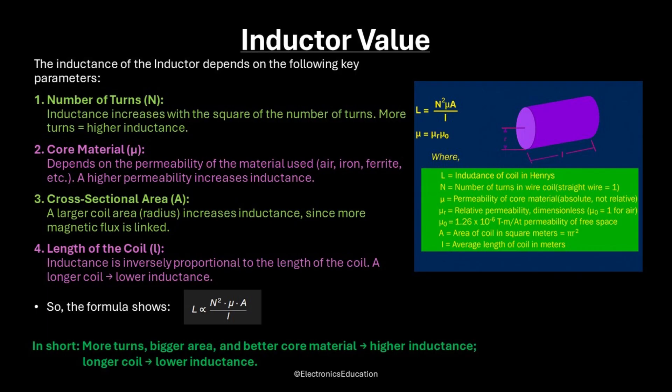The core material can be air, iron, ferrite, or some other material. A higher permeability increases the inductance. 3. Cross-sectional area of the coil — a larger coil area or radius increases inductance, since more magnetic flux is linked.